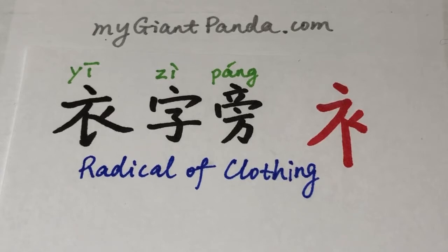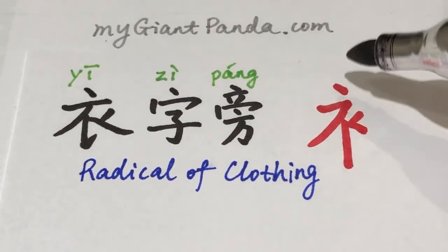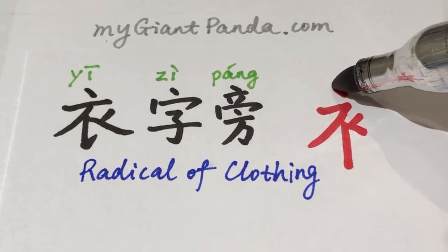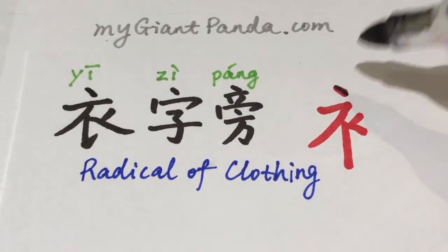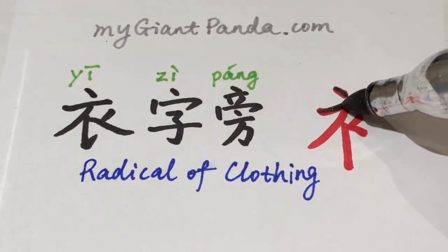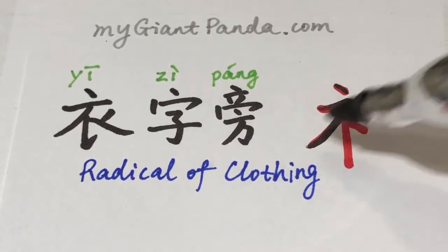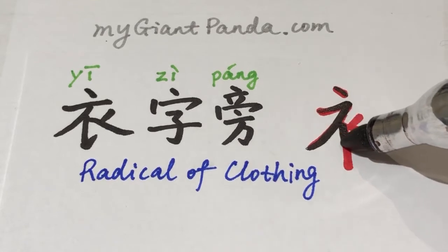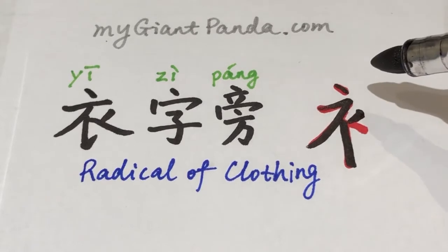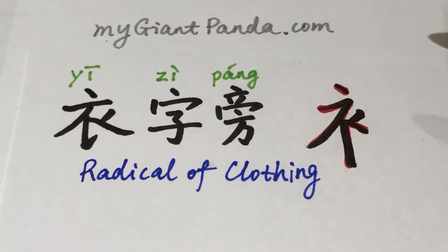Here is how it's written. 衣字旁有五笔组成。第一笔点。第二笔是横撇，撇要长一些，这是连在一起的一笔。第三笔是竖，要垂直。第四笔是一个短撇。第五笔是一个点。